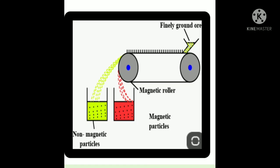So the conveyor belt separates our ore and the gangue particles — that is, the magnetic particles from the non-magnetic particles. Tin stone and magnetite are commonly concentrated by this technique.